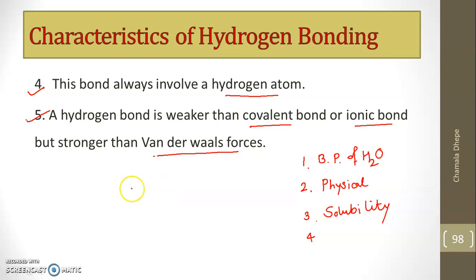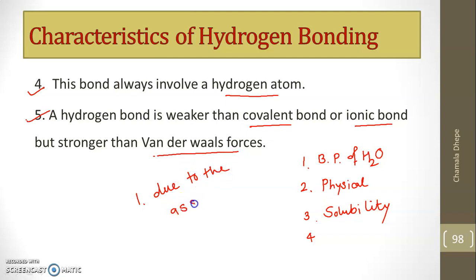In exams, a common question is: why does water have an exceptionally high boiling point of 100°C? The reason is the association of various water molecules through hydrogen bonding — due to this continuous association, the boiling point of water is high at 100°C. This is all about the characteristics of hydrogen bonding.